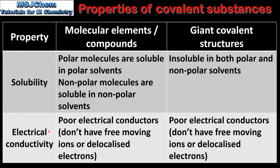Next we have electrical conductivity. Molecular substances are poor electrical conductors because they don't have free moving ions or delocalized electrons. The same is true for giant covalent structures — they are also poor electrical conductors for the same reason. One exception to note is graphite: graphite is a giant covalent structure that has delocalized electrons. The structure of graphite is covered in more detail in a later video.